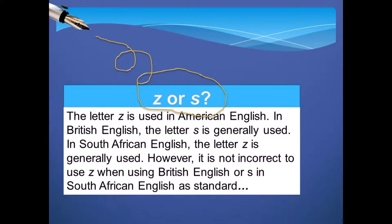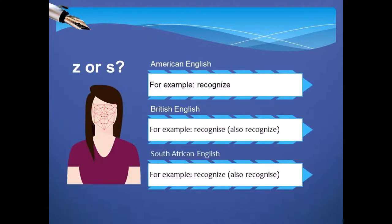What about words ending in Z or S? In British English, for example, R-E-C-O-G-N-I-S-E may also be spelled as R-E-C-O-G-N-I-Z-E. In South African English, R-E-C-O-G-N-I-Z-E may also be spelled as R-E-C-O-G-N-I-S-E. However, in American English, the spelling is only acceptable as R-E-C-O-G-N-I-Z-E.